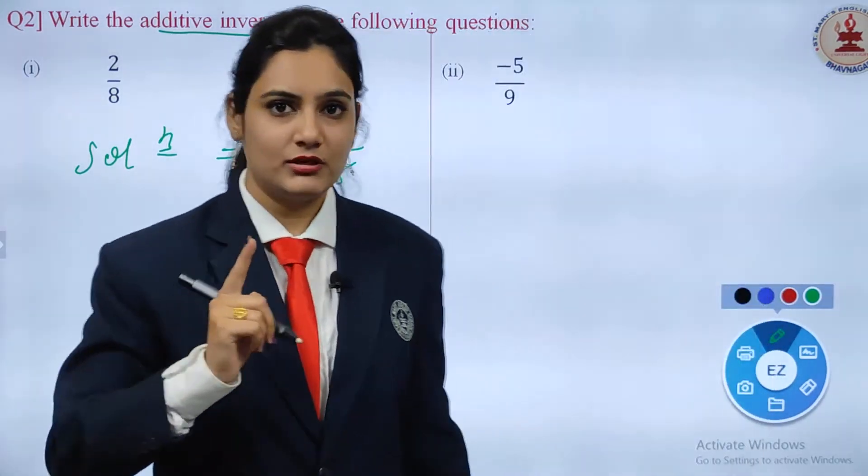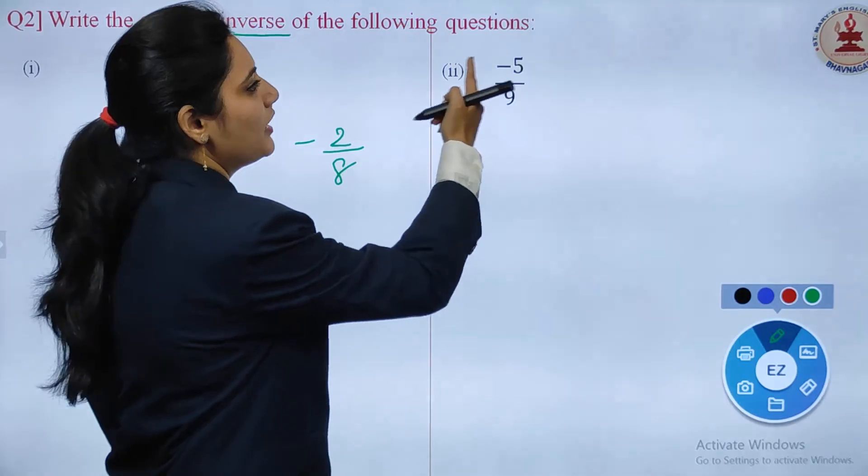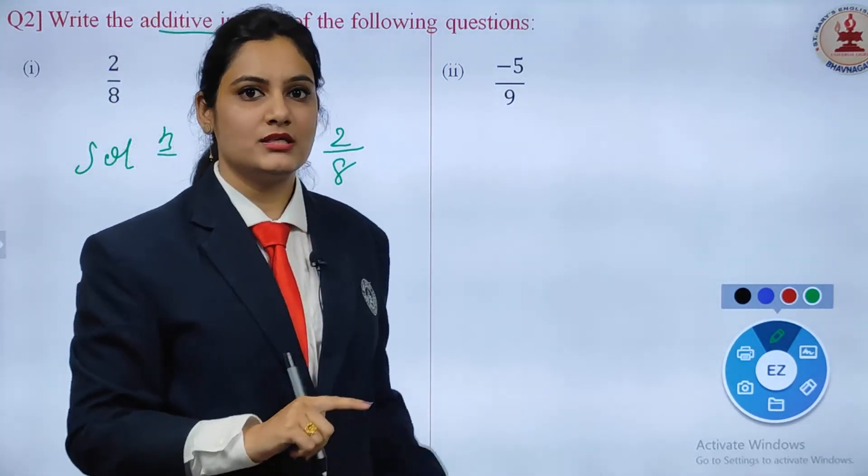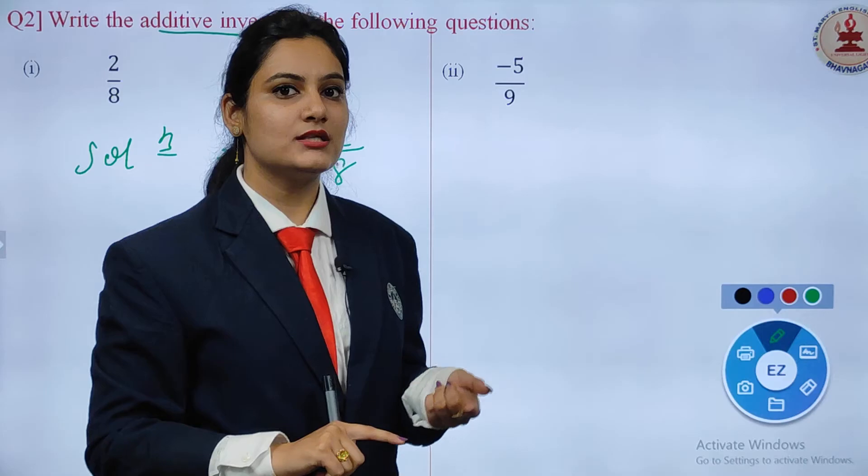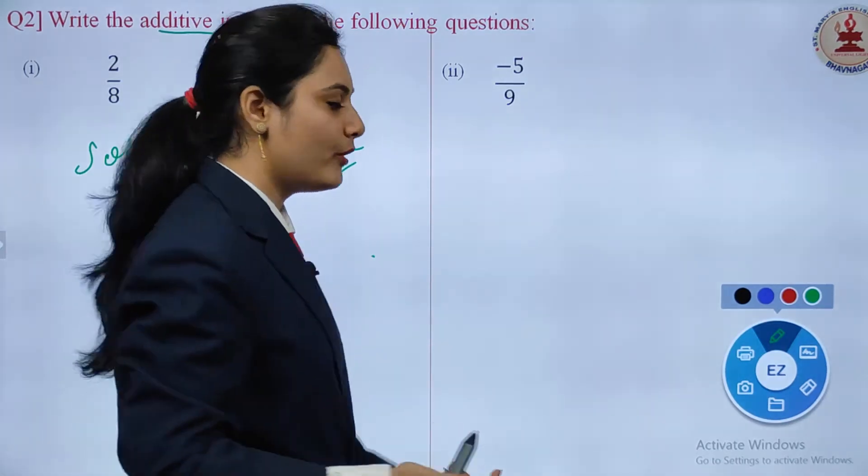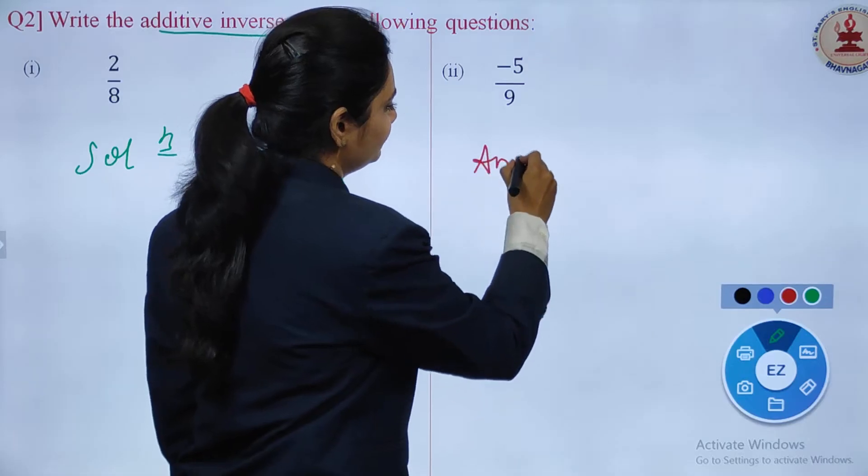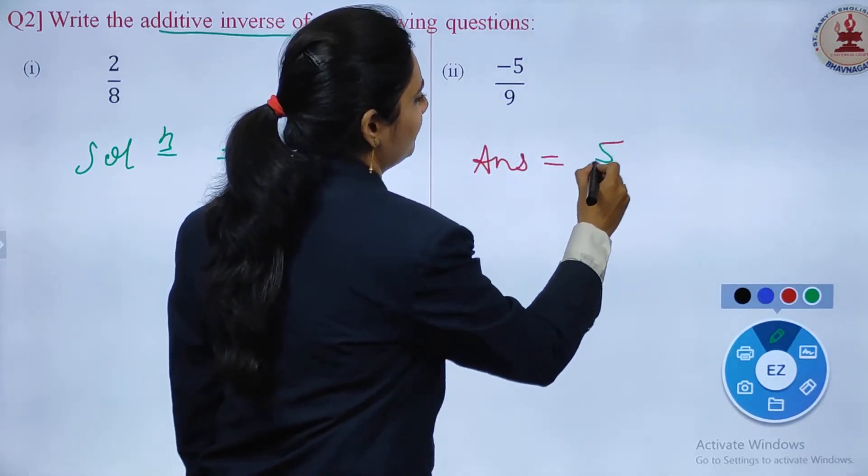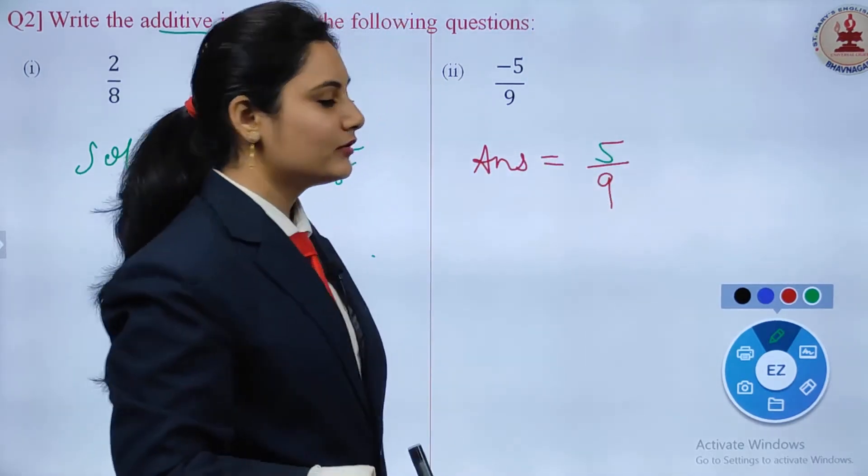Now the additive inverse for the second question: -5/9. See children, it is negative, so just change the sign. Instead of negative, the answer will be positive. So the answer is 5/9.